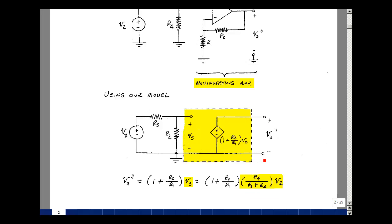The voltage at V3 double prime is 1 plus R2 over R1 times this voltage V sub S. That's just a voltage divider because I've got the same current in these two resistors. The voltage V sub S is R4 over R3 plus R4 times V2. So now I've got the output due to the second source.